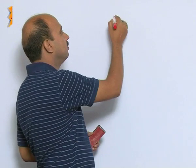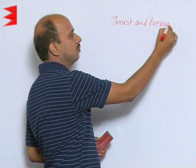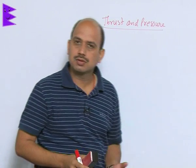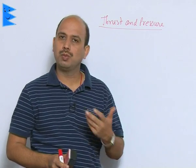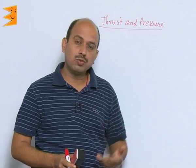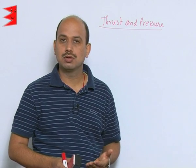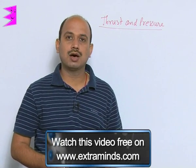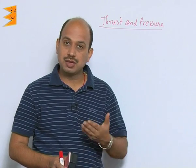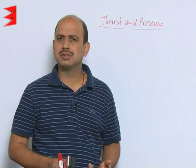The next topic is thrust and pressure. What do you mean by thrust and what do you mean by pressure? A very simple example: if you are standing on the ground you have your weight, meaning some force is being applied and you are being pulled by the earth. You are applying force on the ground. If you stand on sand, you will find the sand gets depressed — it means some force is acting, causing your feet to go down into the sand, and there is a depression which can be easily visible.